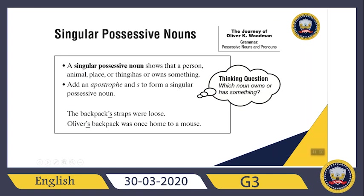What does it mean? A singular possessive noun shows that a person, animal, place, or thing has or owns something. How can I show a singular possessive noun? For example, backpack is my noun, so I will make it a singular possessive noun. After backpack, I will put an apostrophe and then I can put 's'. The backpack's straps were loose. These straps belong to the backpack. So I can add an apostrophe then 's'.